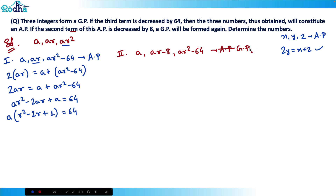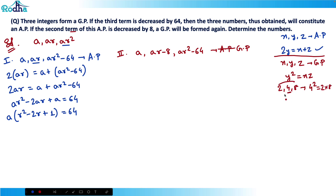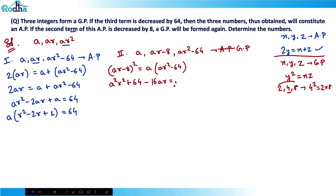For example, 2, 4, 8 are in GP so 4² = 2 × 8 — middle term's square equals product of extremes. Applying this: (ar − 8)² = a(ar² − 64). Expanding: a²r² + 64 − 16ar = a²r² − 64a. The a²r² terms cancel, giving us: 64 − 16ar = −64a, which rearranges to 16ar − 64a = 64. This is equation two.